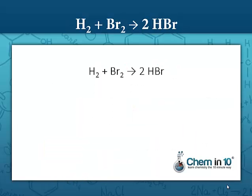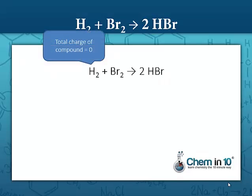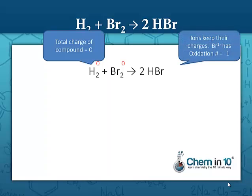Let's look at the second reaction: hydrogen plus bromine yields two hydrogen bromide. Since two hydrogen atoms together make a zero-charge compound, hydrogen has an oxidation number of zero. And the same with bromine — since two bromine atoms together make a compound of zero charge, each bromine must be zero. Looking at the products, ions keep their charges, so bromide (Br⁻) has an oxidation number of negative one, and hydrogen, to make it neutral, has an oxidation number of plus one.